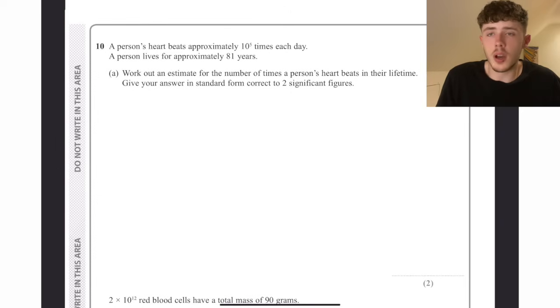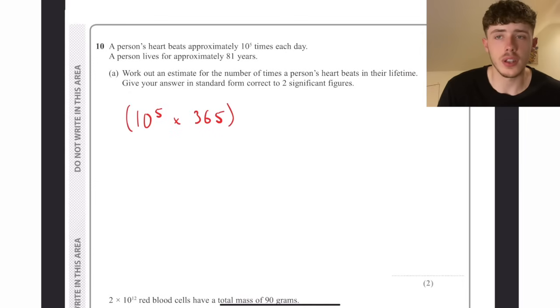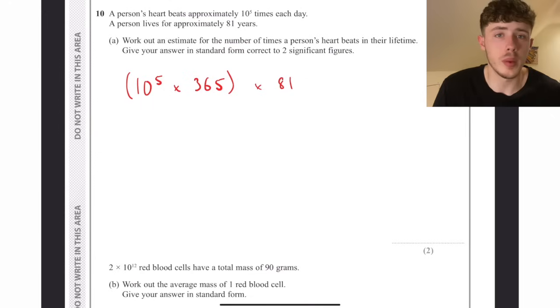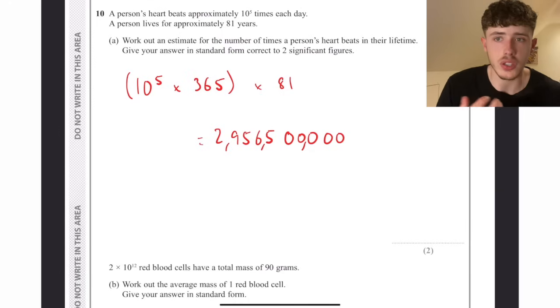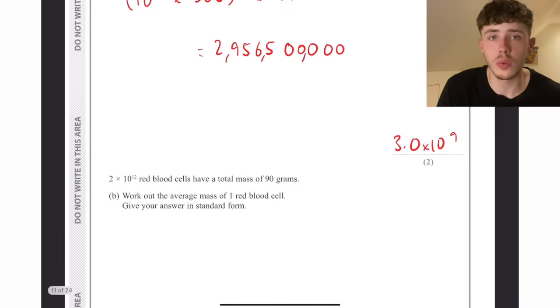Question 10. A person's heart beats approximately 10 to the 5 times a day, so almost like 100,000. We have to work out how many times it beats in a lifetime, taking the average lifetime of 81 years. So 10 to the 5 times 365 will be one year, times that by 81. We put it in our calculator and it gives us the whole 2.9 billion basically, and putting that in standard form to two significant figures is going to be 3.0 times 10 to the 9.